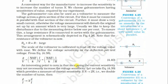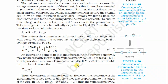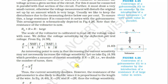The scale of the voltmeter is calibrated to read the voltage value. We define voltage sensitivity as the deflection per unit voltage. So φ/v = NAB/k · (i/v) = NAB/(k·R), since i/v = 1/R. An interesting point to note is that increasing the current sensitivity may not necessarily increase the voltage sensitivity.